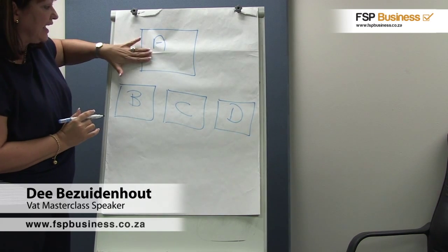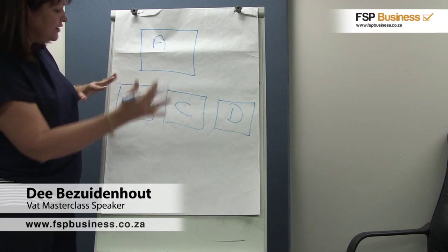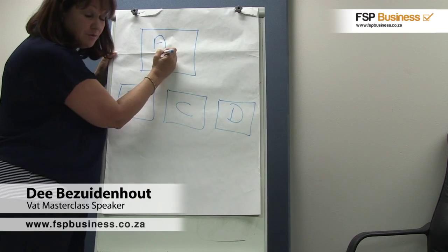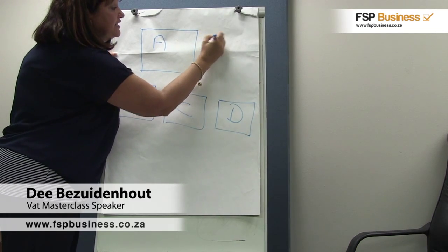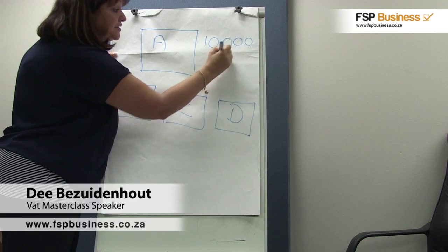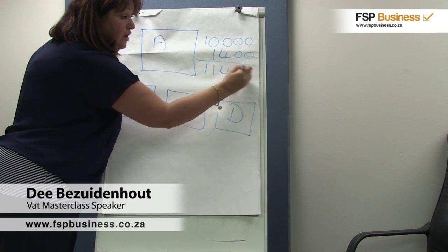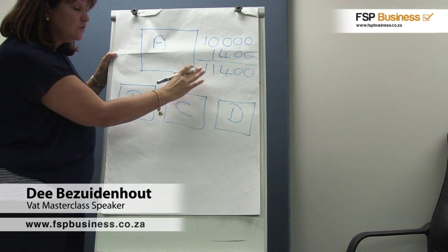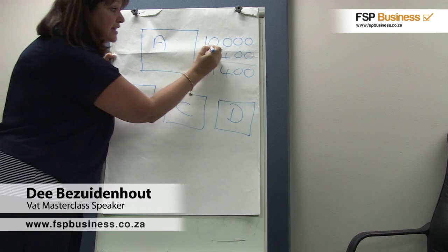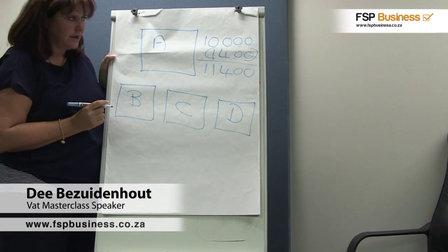Now Company A holds the account at the stationers, and so at the end of the month let us assume a tax invoice arrives in the name of Company A for 10,000 Rand, VAT of 1,400, total 11,400 Rand. The tax invoice is in the name of Company A, so Company A claims the input tax of 1,400 Rand.